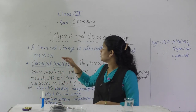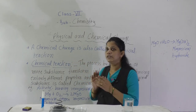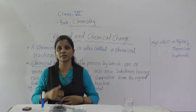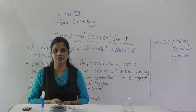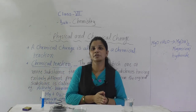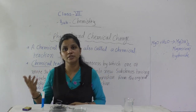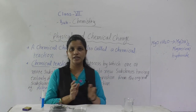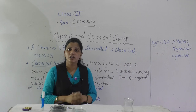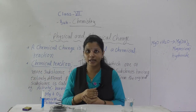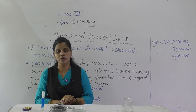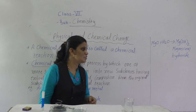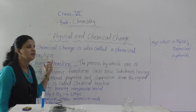A chemical change is also called a chemical reaction. A chemical change means a permanent change — it is an irreversible change. In chemical changes, new substances are formed. That you already know from the last lecture. So in a chemical change, a chemical reaction occurs. Chemical change is nothing but a chemical reaction.